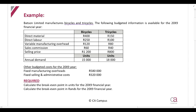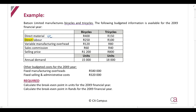Direct material is a variable cost — constant per unit but varying in total with the number of units manufactured. Direct labour requires care; you can't always assume it's variable, but here you're specifically told it's direct labour, so it's safe to assume it's variable. Variable manufacturing overhead is obviously a variable cost. Sales commission varies with units sold, so that is also variable. You're also given the selling price per unit and annual demand for each product. Fixed manufacturing overhead and fixed selling and admin costs are both fixed costs.